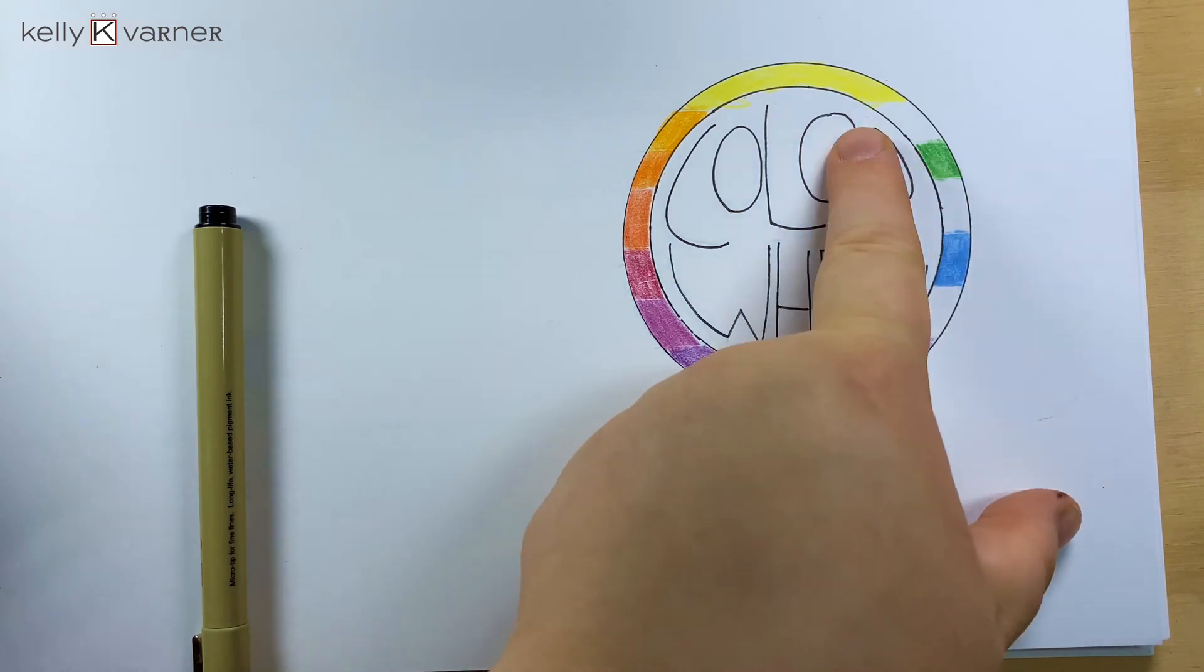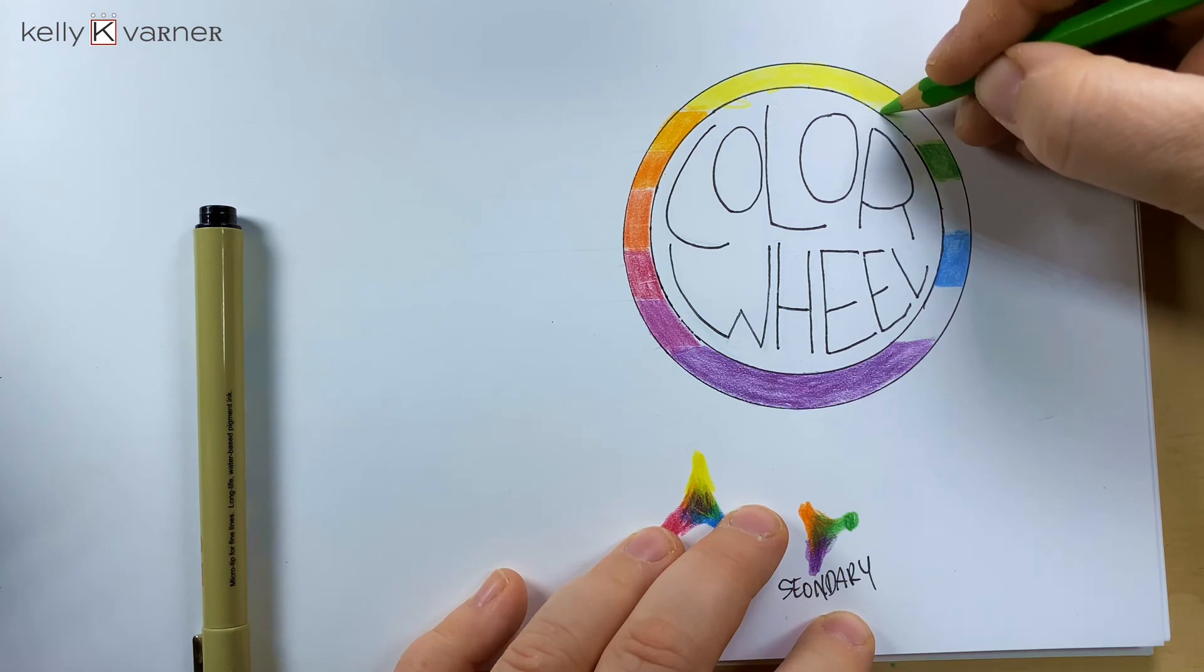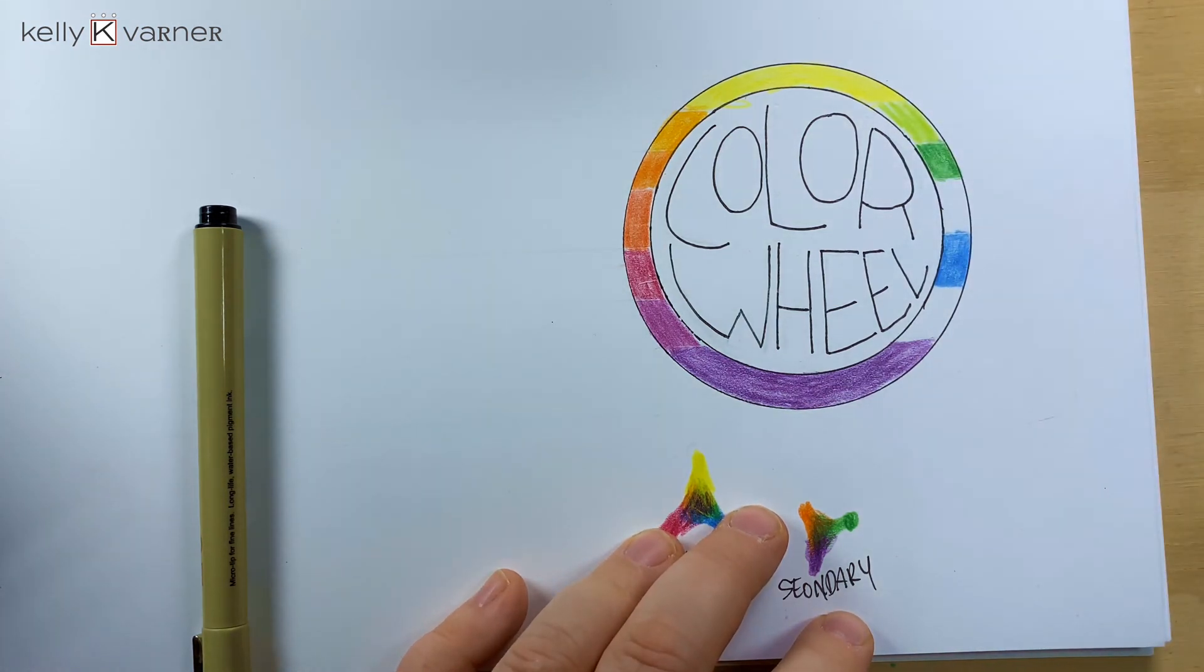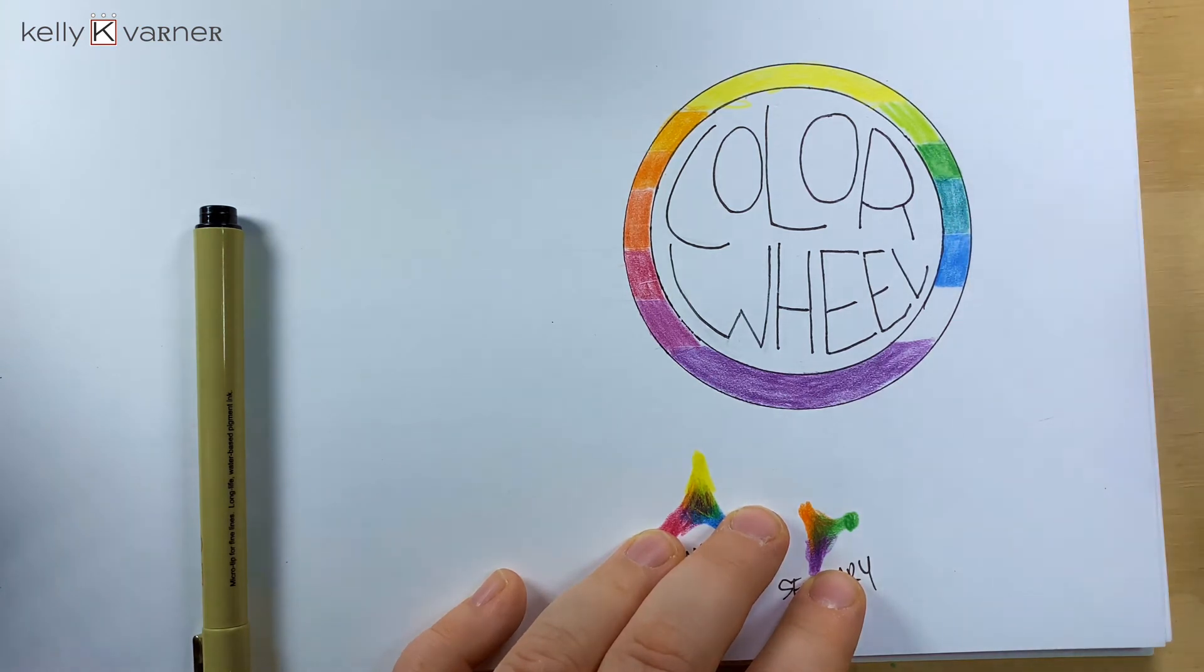If you mix yellow and green, you get yellow-green. You notice I'm always saying the primary one first and then the secondary. If you mix the green and the blue, you're going to get a nice blue-green. The violet and the blue, you'll have a nice blue-violet.